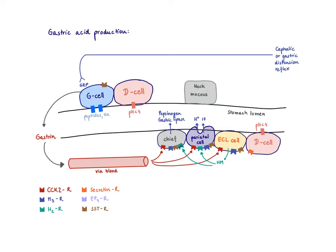Histamine can then act as a paracrine mediator to activate the histamine 2 receptor on the parietal cell. This is a paracrine mediator, meaning it comes from a neighboring cell — histamine does not need to travel through the blood. Those cells sit right next to it.